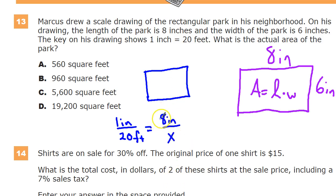So, 1 times x is x, and I'm just going to do cross products here, by the way, and 8 times 20 is 160. So, this is in feet, so I'm going to make it 160 feet right here.